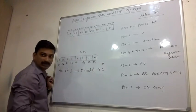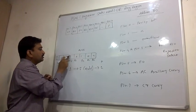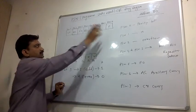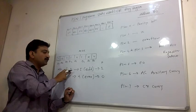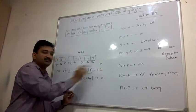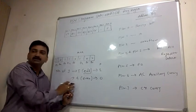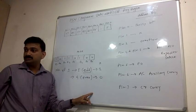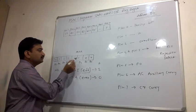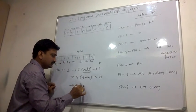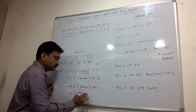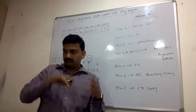So parity becomes one when the number of ones is odd. If the total number of ones is even, the parity bit will be zero. For example, if there are six ones in the accumulator — six is even — parity will be zero. If there are seven ones — seven is odd — parity will be one. So: even number of ones → parity = 0; odd number of ones → parity = 1.